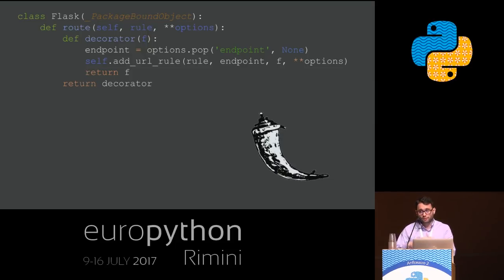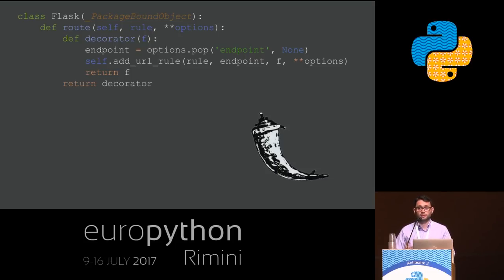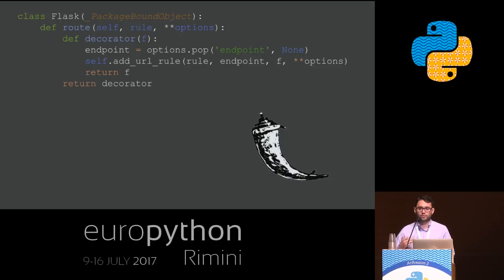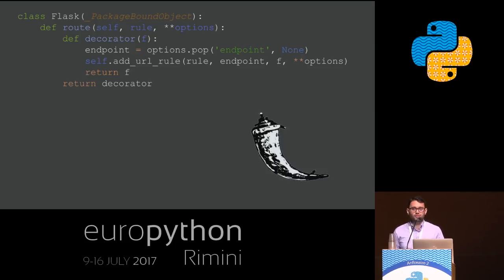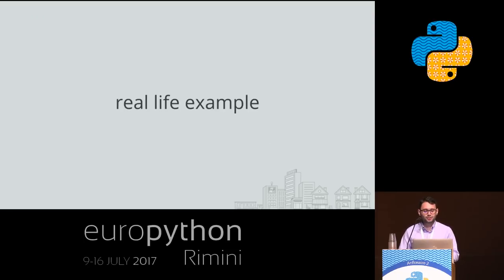Basically, in the Flask class — the one used to instantiate the app object — we define a route method which takes some parameters. Since it's a decorator that takes parameters, we need an inner function, and this inner function is the actual decorator. In the actual decorator, Flask defines an endpoint using the options parameter provided, adds a rule for the endpoint to the app, returns the function, and returns the inner function. My talk was supposed to stop here, but then I noticed I booked a 45-minute slot instead of a 15-minute one, so I decided to go for a real-life example.